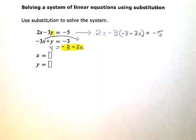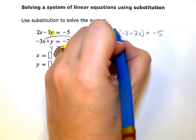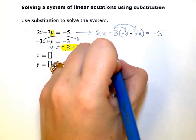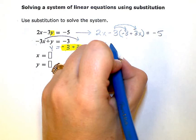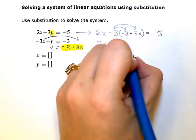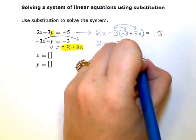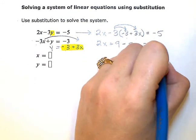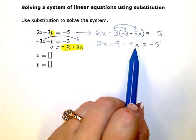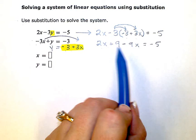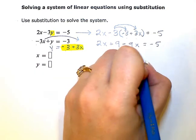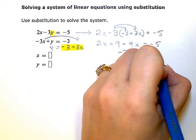Now I just go ahead and solve this equation. So the first thing I'm going to do is distribute. So 2x negative 3 times negative 3 is positive 9, and negative 3 times positive 3x is negative 9x equals negative 5. Then I have two x terms on the left. I'm going to combine my like terms. So 2x minus 9x is negative 7x plus 9 equals negative 5.